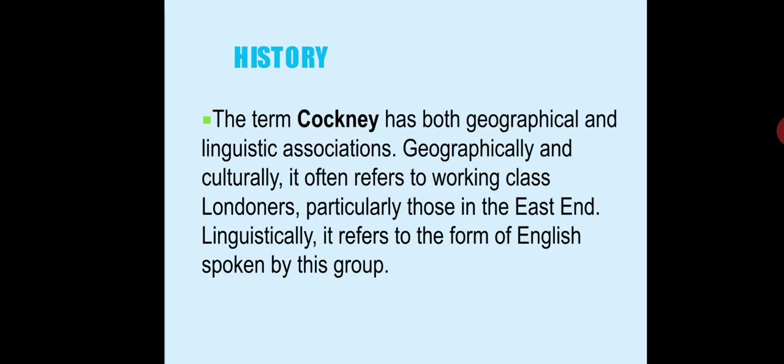The term 'cockney' has both geographical and linguistic associations. Geographically and culturally, it refers to working-class Londoners, particularly those in the East End. Linguistically, it refers to the form of English spoken by this group. When someone is called cockney, it means they can speak English in an average manner — a mix of cultivated and general accepted language. These are people who can communicate with cultivated speakers, British accent speakers, and those who know only the local dialect.